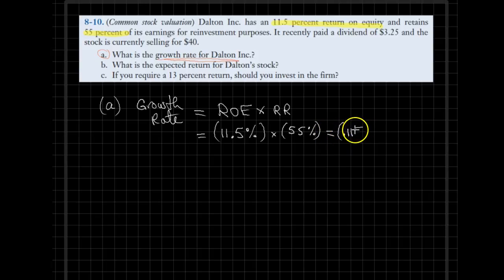Now we need to be very careful when we do this calculation. Recall how to represent 11.5% as a decimal, and in a similar way, 55% as a decimal. As a result, multiplying these two numbers, we get 0.0633, or alternatively, 6.33%. Either representation is fine.